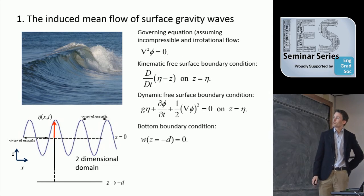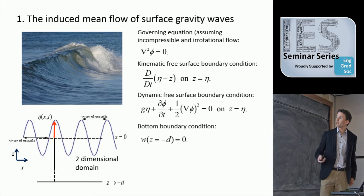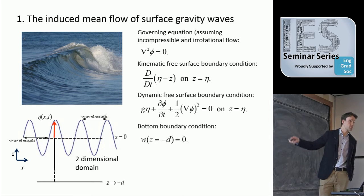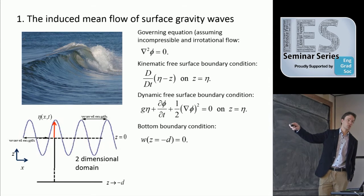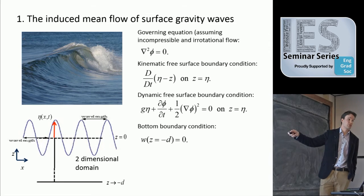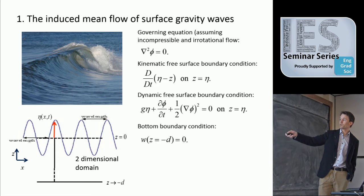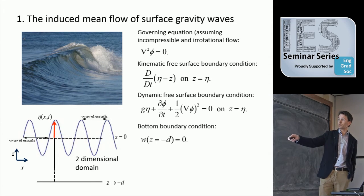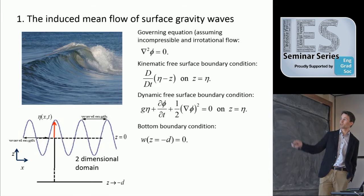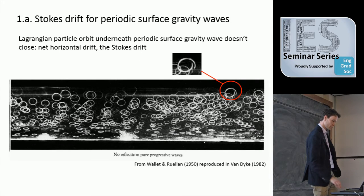If we look at a surface gravity wave, this is the picture we see in the mathematics. For the purpose of this talk, you don't need to follow all the analysis. The main idea is there's a linear governing equation, which is Laplace, if we assume incompressible and irrotational flow. All the non-linearity of the problem — all the real physics — is added at the free surface. There's a kinematic free surface boundary condition and a dynamic free surface boundary condition, essentially saying a particle at the surface stays at the surface, and the free surface is a streamline where pressure is constant. And there's always a bottom boundary condition. In the simplest possible way, that is the surface gravity wave problem.